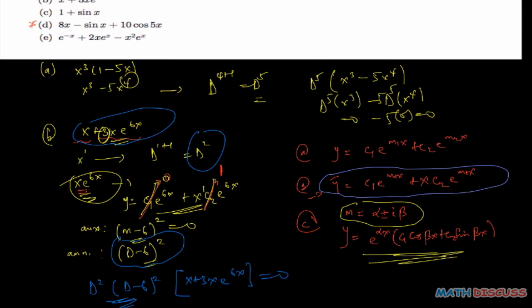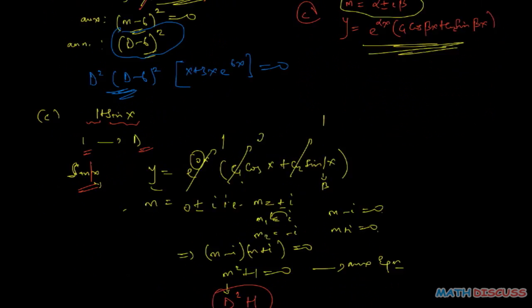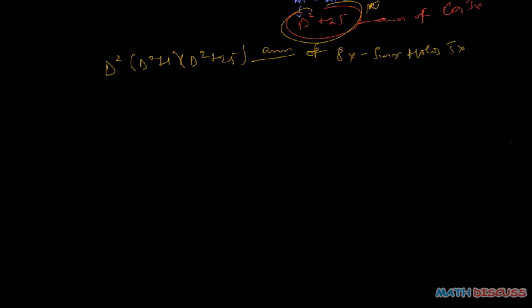Lastly, we consider part (e): find the annihilator of e^(-x) plus 2x*e^x minus x²*e^x.